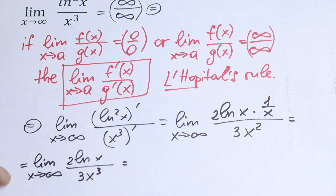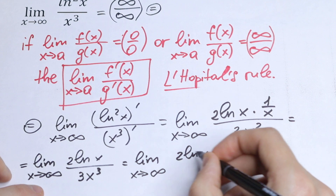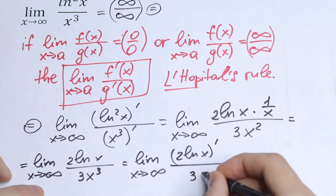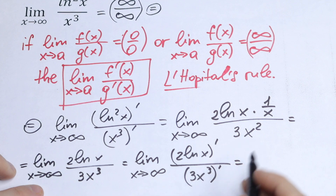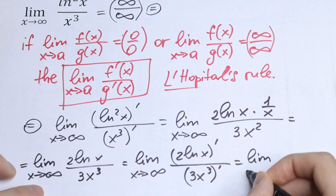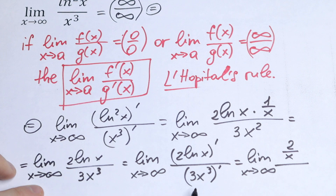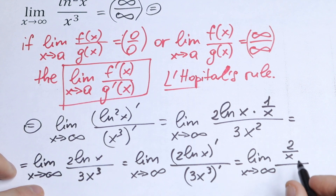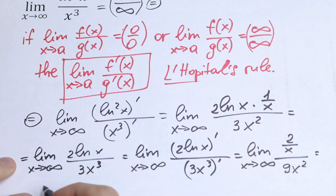Let's apply L'Hôpital's Rule again. We take the limit as x approaches infinity of the derivative of 2·ln(x) over the derivative of 3x³. The derivative of 2·ln(x) is 2/x, and the derivative of 3x³ is 9x². So we have the limit as x approaches infinity of 2/x over 9x².